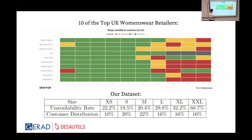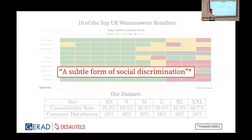We observed the same thing in our dataset. In collaboration with a large European fashion retailer, we found that in one category, despite sizes Large and 2X Large each representing 16% of customers, unavailability is more than twice as high for size 2X Large. This is called a subtle form of social discrimination.